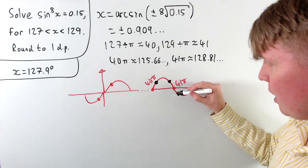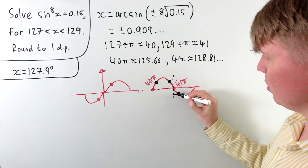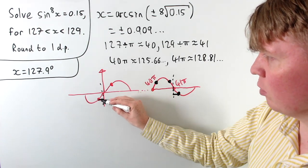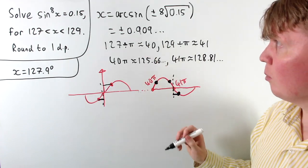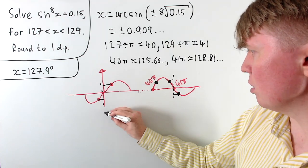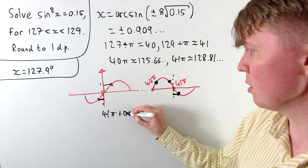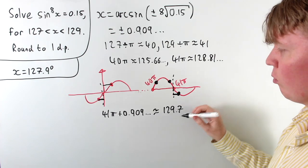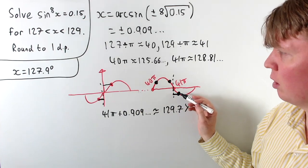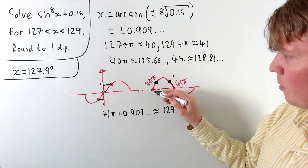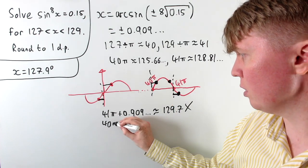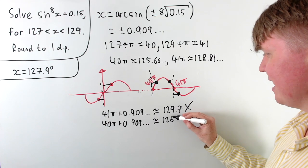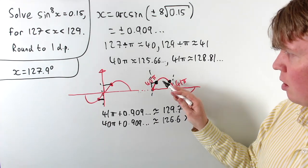Starting with the solution near the bottom: we start at 41π, then add the extra distance 0.909 using symmetry of the graph. So our first potential solution is 41π plus 0.909, which gives around 129.7 — too big, so outside our range. What about the one on the left? Doing 40π plus 0.909 gives around 126.6 approximately, which is too small. So this one doesn't work either.